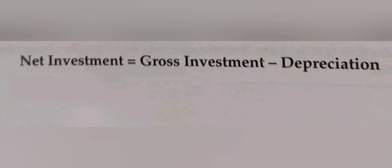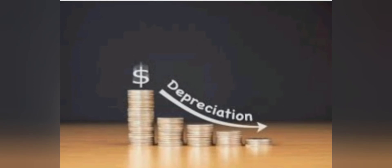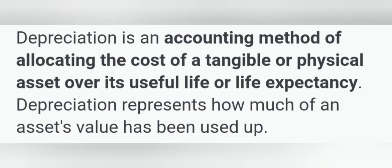What is depreciation and how can we calculate it? Depreciation is an accounting method of allocating the cost of a tangible or physical asset over its useful life or life expectancy. Depreciation represents how much of an asset's value has been used up. For fixed assets or tangible assets, we use depreciation to measure how much value the machine has consumed. Depreciation is the difference between gross investment and net investment.